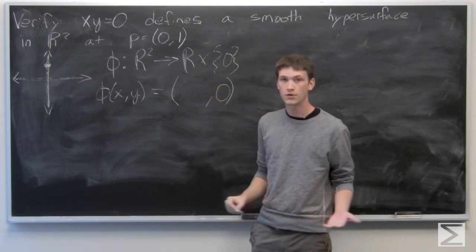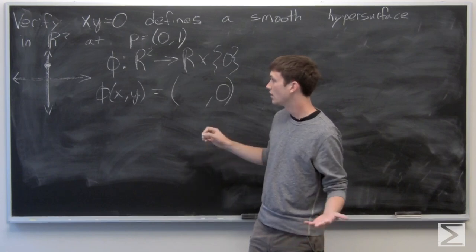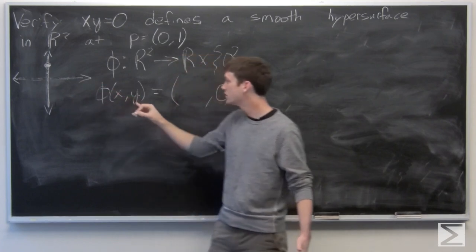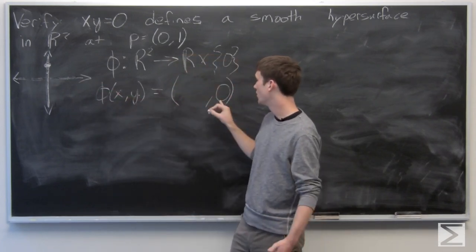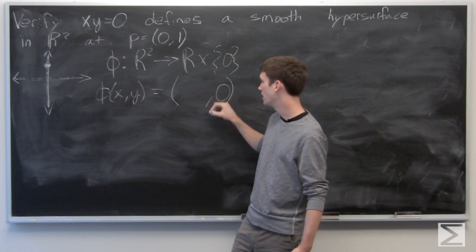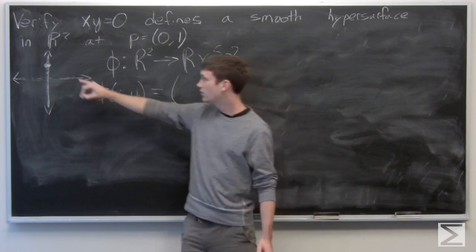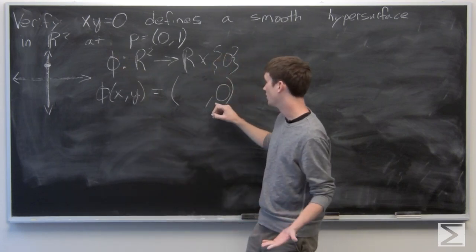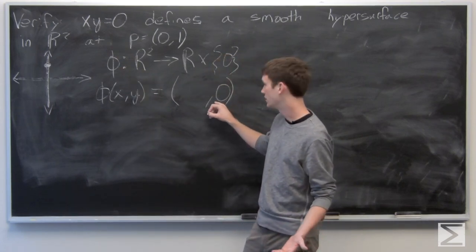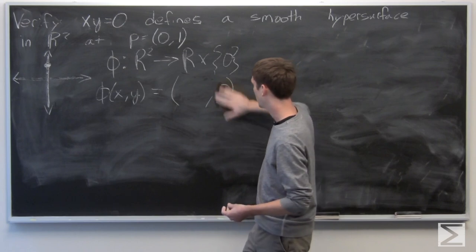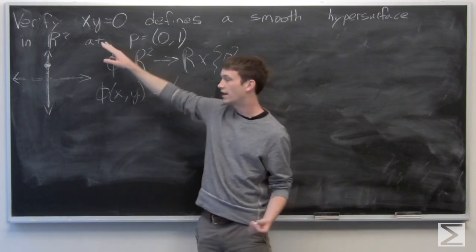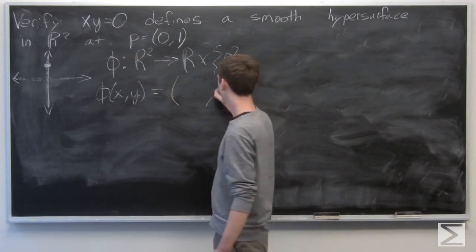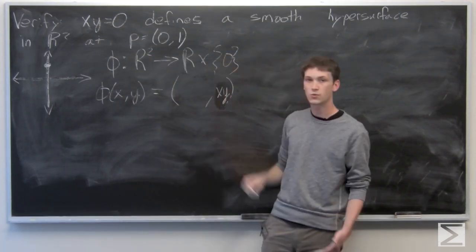So using our given information, we want any points on this curve to go to some real number and 0. And the only thing we know about this curve is that x times y equals 0. But we're looking for something to fill this coordinate or to take all points on xy equals 0 to 0. So we can just let that second component be xy.